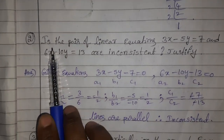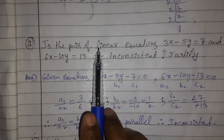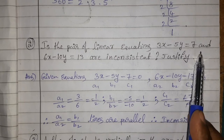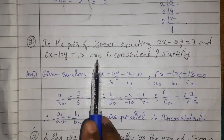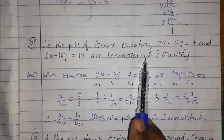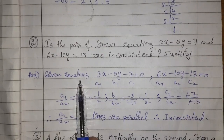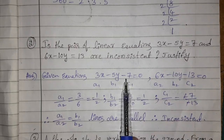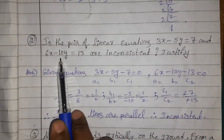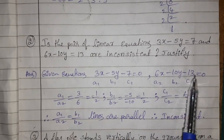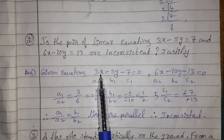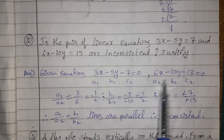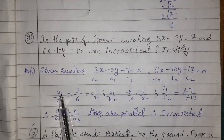Second question: is the pair of linear equations 3x − 5y = 7 and 6x − 10y = 13 consistent or inconsistent? Rearranging: 3x − 5y − 7 = 0 and 6x − 10y − 13 = 0. The coefficients are a₁, b₁, c₁ and a₂, b₂, c₂.